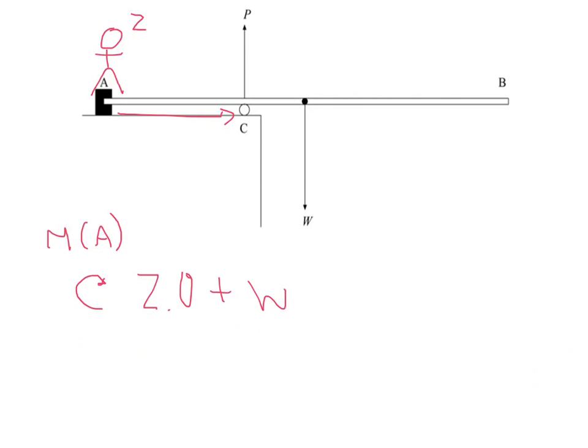We're going to call the distance A to C, A, and the distance C to W, B. So the perpendicular distance between the point we're taking moments about and W is obviously in this case A plus B.